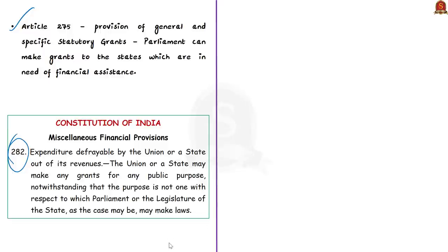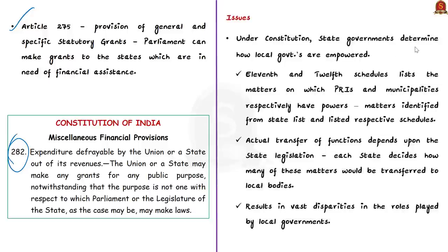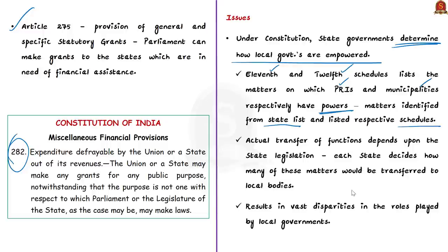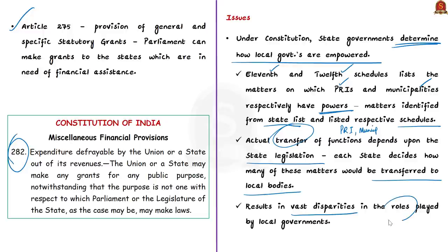The first issue is that under the constitution, state governments determine how local governments are empowered. The 11th and 12th Schedules list matters on which Panchayati Raj institutions and municipalities respectively have powers. These matters are identified from the state list and listed in the respective schedules to be transferred to PRIs or municipalities. However, the actual transfer of functions depends on state legislation — each state decides how many matters to transfer to local bodies — resulting in vast disparities in the role played by local governments.